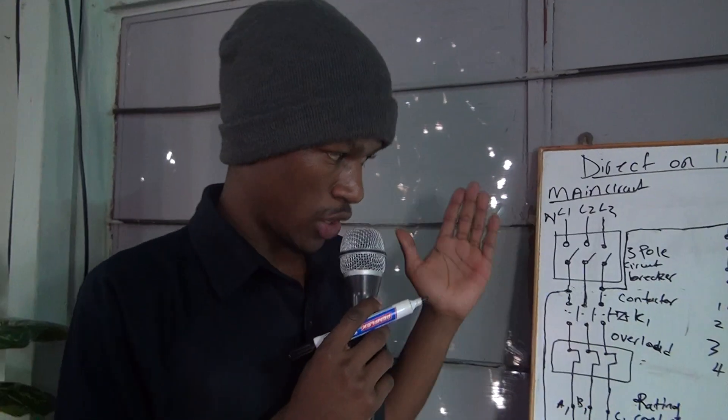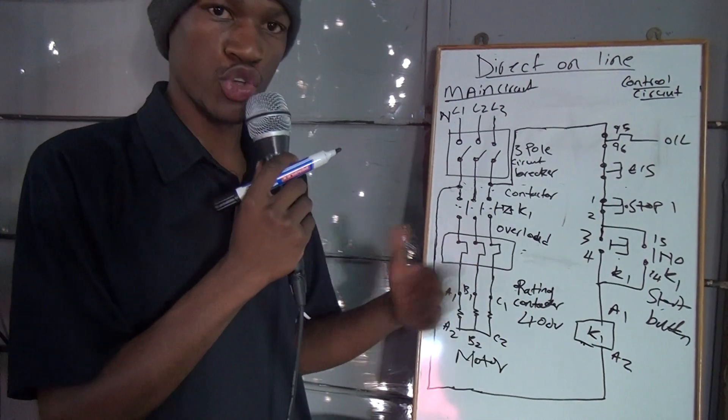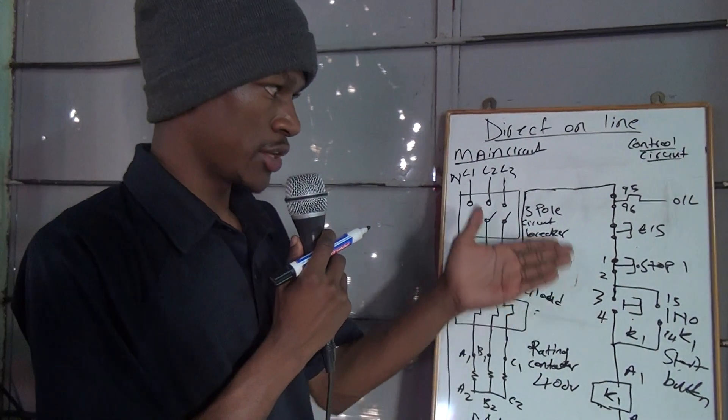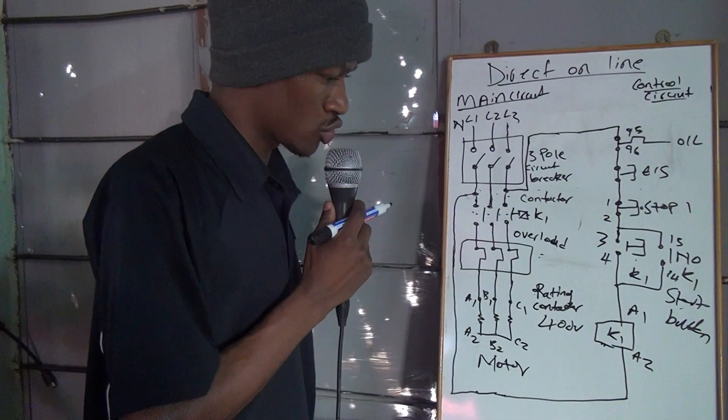Immediately, when you know how to draw a direct online, and you understand the operation of direct online, then it will be simple for you to master all the sequences. From direct online, you have emergency stop, stop button, then you start button, then straight to your coil.